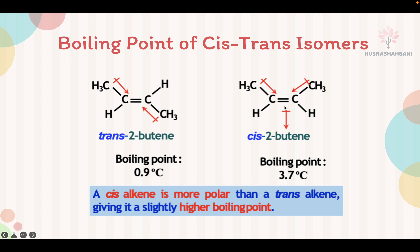Cis cannot cancel out each other. So that's why cis is more polar than trans-alkene. So cis-alkene has a slightly higher boiling point than trans-alkene, even though their number of carbons are the same.